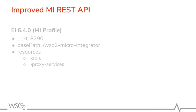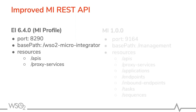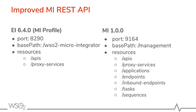We have also improved the existing REST API. Previously we had just two resources to query APIs and proxies. In Micro Integrator 1.0.0, we have added several more resources to get information about deployed artifacts. You can now query about applications, tasks, sequences, endpoints, and inbound endpoints in addition to APIs and proxy services.